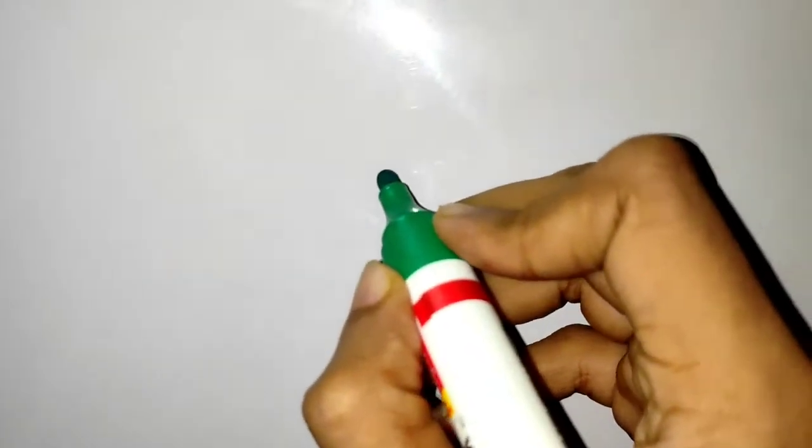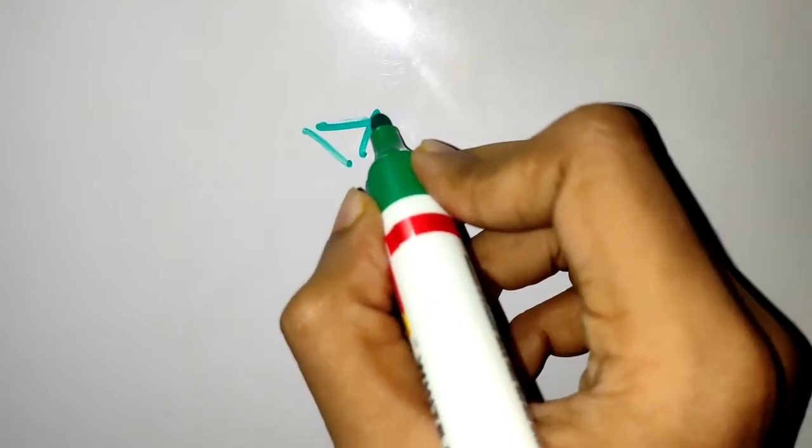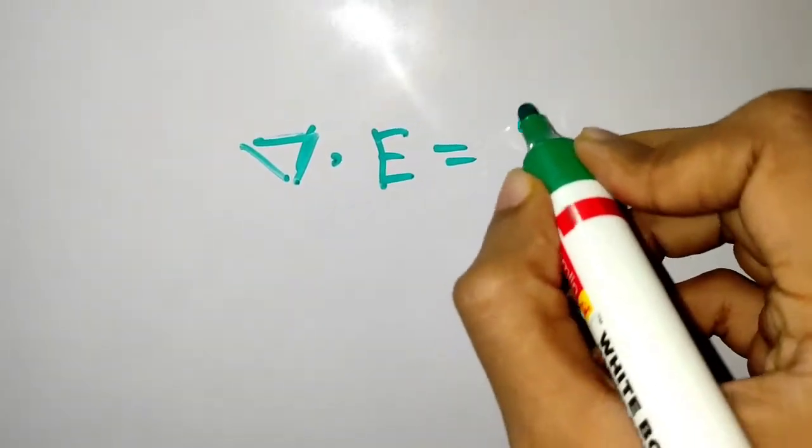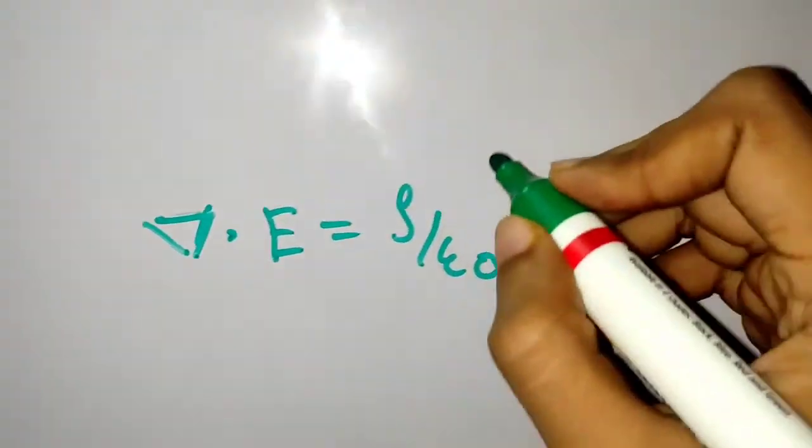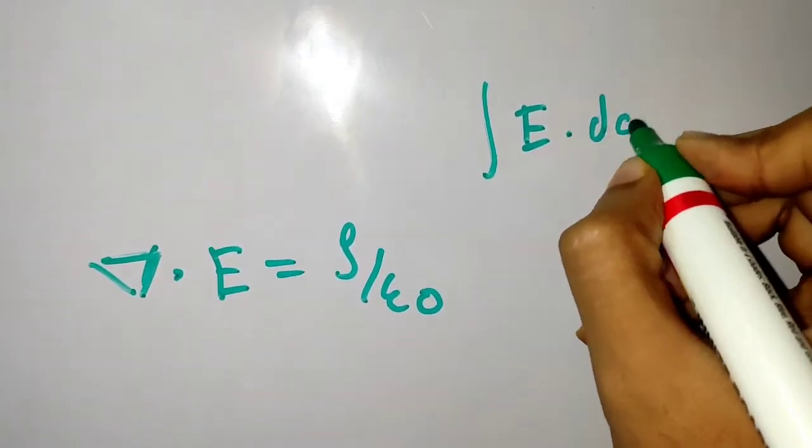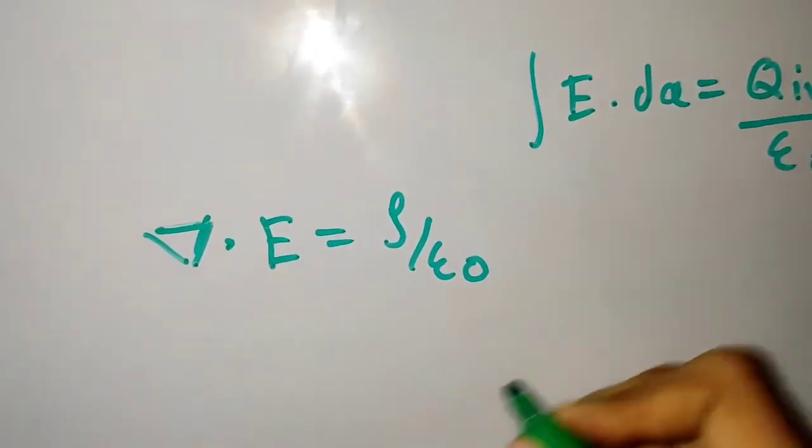Let's recap quickly Maxwell's equations in vacuum without any dielectrics. We have divergence of E equals rho over epsilon naught. This is our famous Gauss law, which in integral form is E dot dA equals net charge inside divided by epsilon naught.